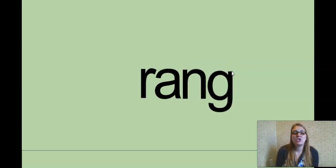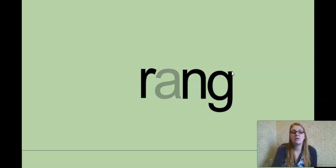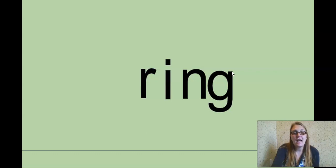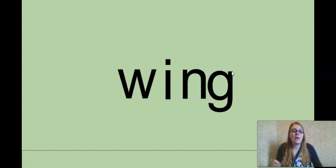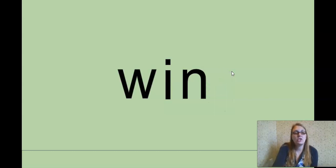I'm going to get rid of the T, add the NG combination. R A NG, rang. Rang. Get rid of the A, add an I for ring. King. Now with an S, sing. Now with a Z, zing. W, wing, like a bird might have a wing. Get rid of the G. We have win. And that's our last word for this chain. W I N. Win.